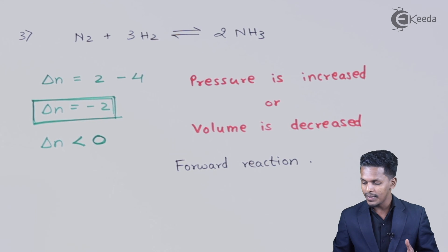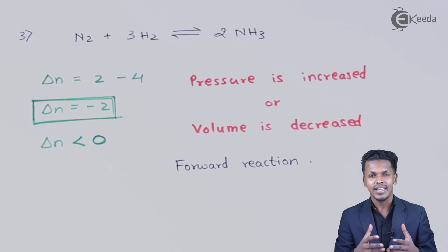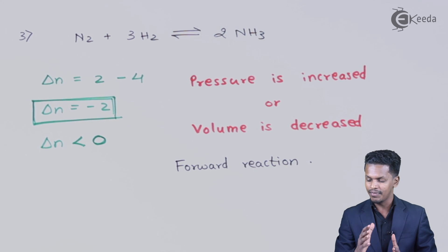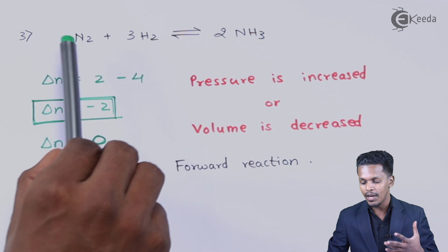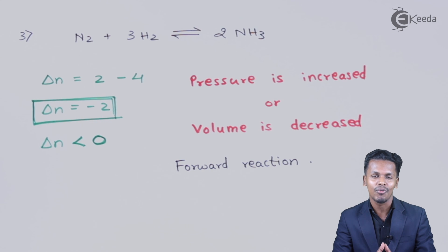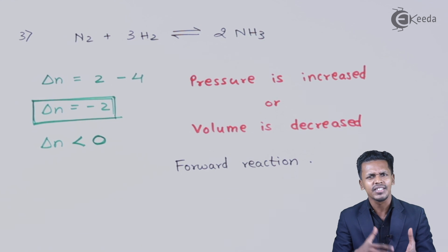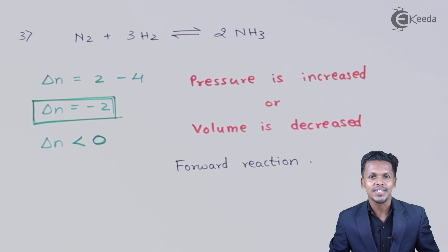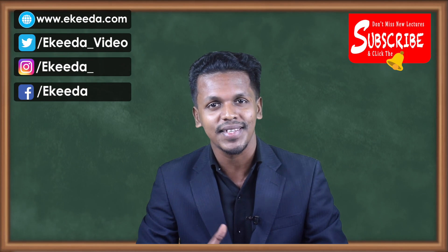This is obvious to understand: whenever we prepare NH₃ from Haber's process, we have to apply more pressure — and temperature also has to be maintained, which we'll discuss in the next lecture. With N₂ and 3H₂ at high pressure, we get two moles of NH₃ as a forward reaction. These were the three conditions showing how pressure and volume can alter a reversible reaction into a forward or reverse reaction. Thank you friends for watching — I hope you understood clearly. Please share and subscribe to the channel.